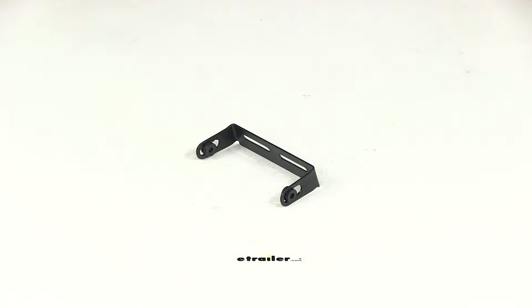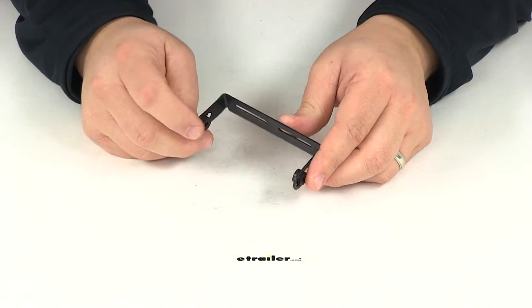Today we're going to be taking a look at part number C51114. This is the mounting bracket for the Curt Venturer trailer brake controller.